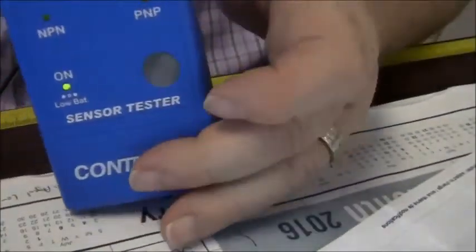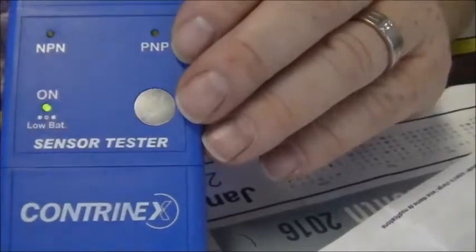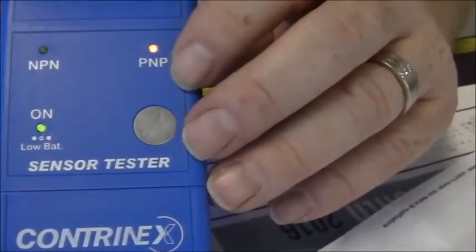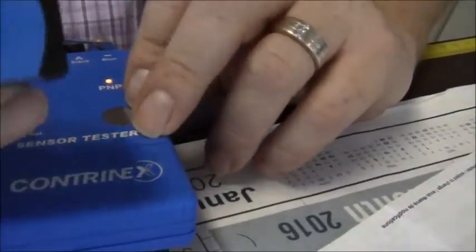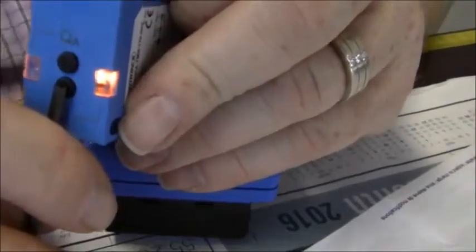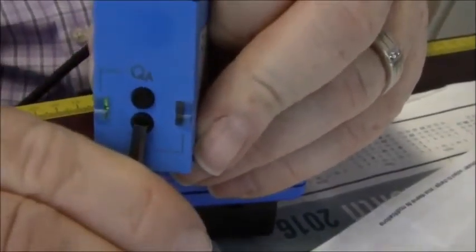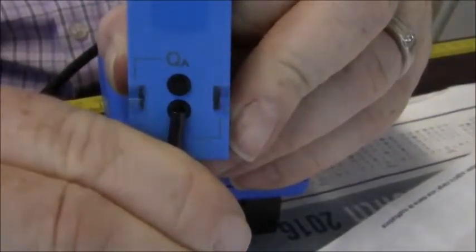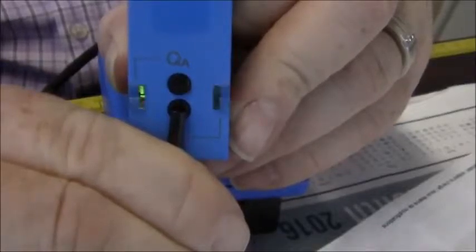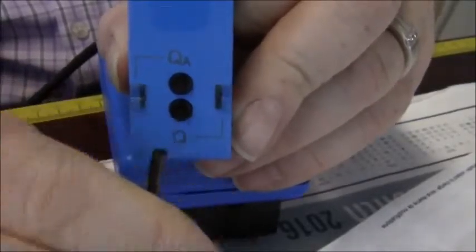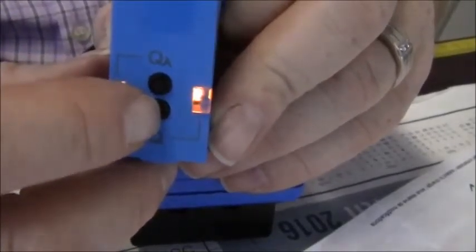You'll see right now that it's set up on PNP. What I can do is press and hold this Q. I'm supposed to hold it for greater than 13 seconds. The yellow and green will flash at the same time. When I let go, they both flash at the same time. If I press it once, I've taken it out of PNP into NPN.